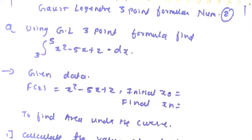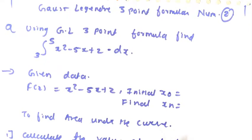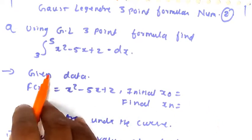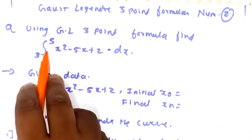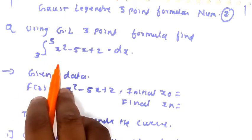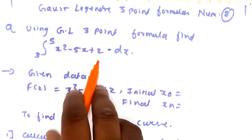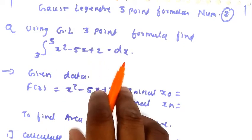Hello everyone. In this video we are going to see the second numerical for Gauss-Legendre three-point formula. The numerical is: using Gauss-Legendre three-point formula, find out the integration from 3 to 5 of x squared minus 5x plus 2 dx.